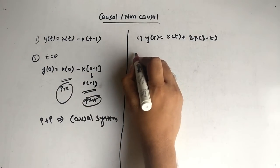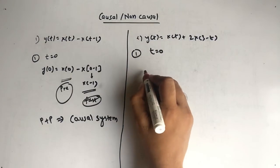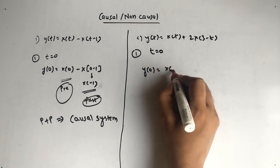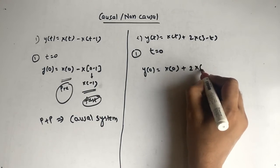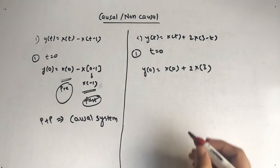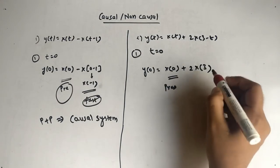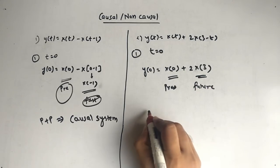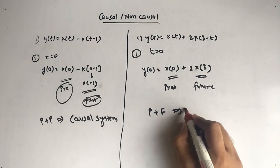For the second question, we put t equal to 0. After putting t equal to 0, we get y(0) = x(0) + 2·x(3), because 3 minus 0 is 3. So you can see here we get present and we get future. Present plus future — this is non-causal.